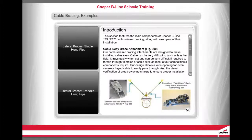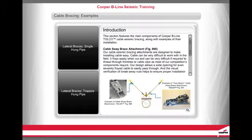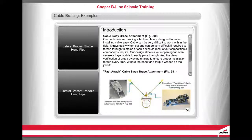This section features the main components of Cooper B-Line Tolco cable seismic bracing. The Cable Sway Brace Attachment, Figure 990, is designed to make installing cable easy. Cable can be very difficult to work with in the field — it frays easily when cut and can be difficult to thread through thimbles or cable clips as most competition's components require. The design allows a wide opening for even severely frayed cable to easily pass through, and break-away nuts help ensure proper installation torque every time without the need for a torque wrench on the job site.